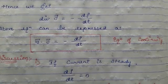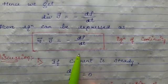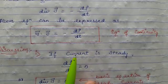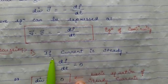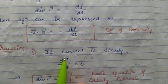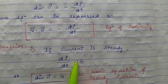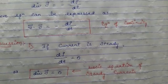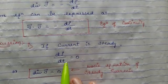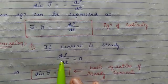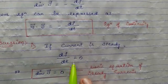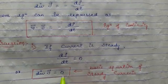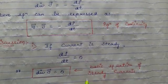This equation represents the physical fact of conservation of charge. Now, moving to the discussion: if the current is steady — that is, its magnitude is not changing with space or time — then by the law of conservation of charge, the total charge inside the elementary volume remains constant with time. That's why dρ/dt = 0, which means ∇·J = 0, which is the basic equation of steady current.